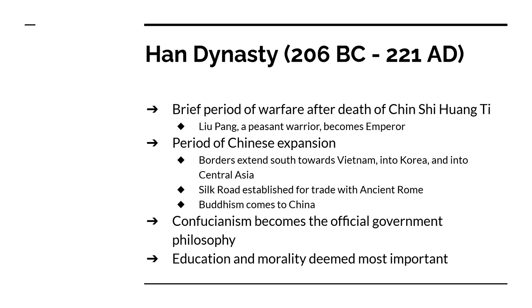After the death of Qin Shi Huangdi, there's a brief period of warfare. From 211 to 206 BC there's another civil war. In 206 BC, Liu Bang — a peasant warrior — becomes emperor. What's really interesting is that he was a peasant who rises to the rank of emperor. Under the Han dynasty, which is going to last 400 to 500 years, the Chinese greatly expand their borders — going all the way from Vietnam to Korea and almost to where Tibet is today.